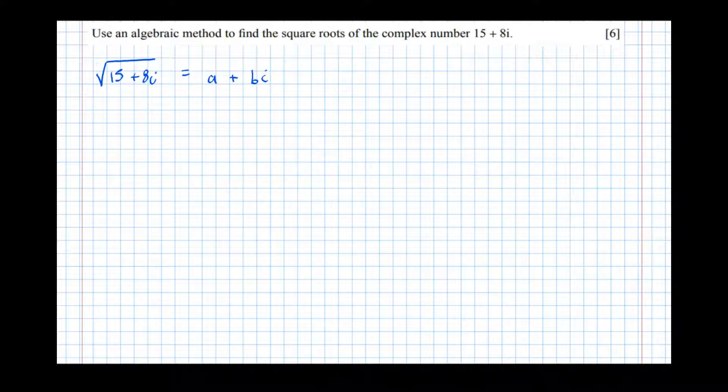So if we square both sides, the left-hand side becomes 15 plus 8i. Square root squared means it just becomes 15 plus 8i. And the right-hand side, if we square it, we times it by itself, like that, to get a squared...